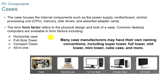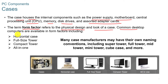Section 1.2: PC components. The first component is cases. The case houses the internal components such as your power supply, motherboard, CPU, memory, disk drives, and assorted adapter cards. The term form factor refers to the physical design and look of a case. Most common desktop computers are available in form factors including a horizontal case, full-size tower, compact tower, and all-in-ones.